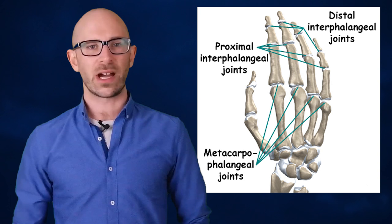The second knuckle is the proximal interphalangeal joint, or PIP, and the last knuckle is the distal interphalangeal joint, DIP.